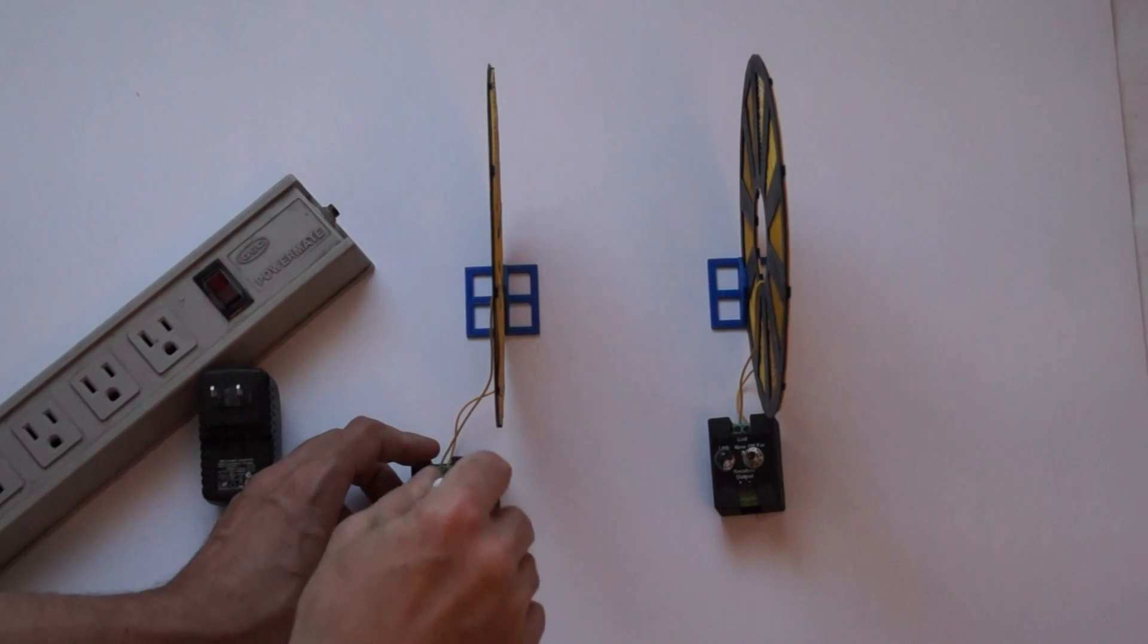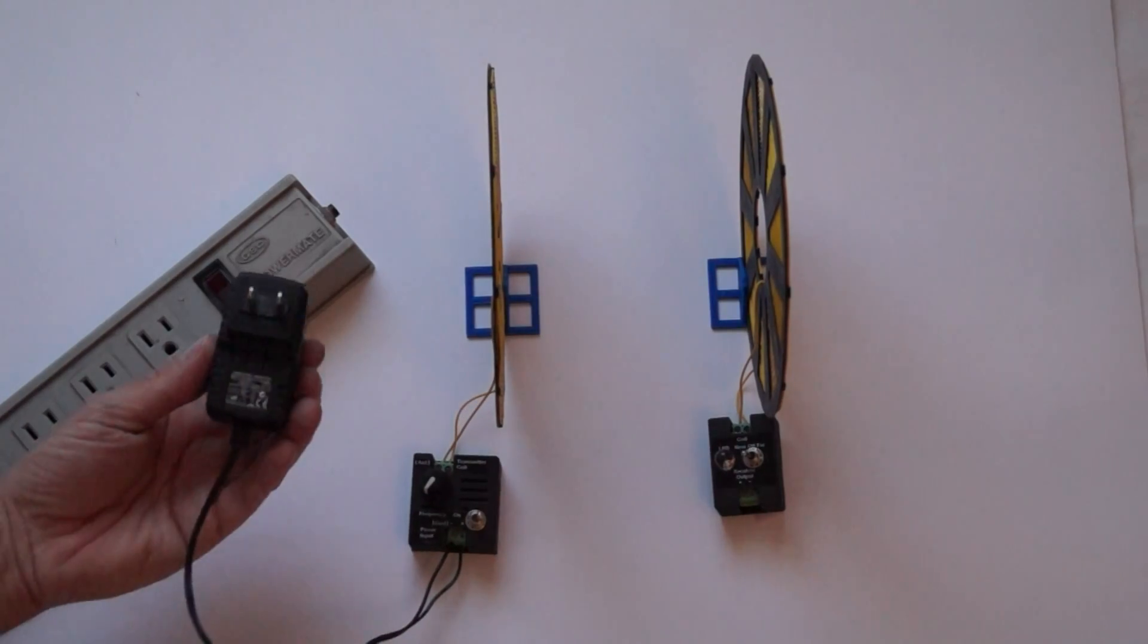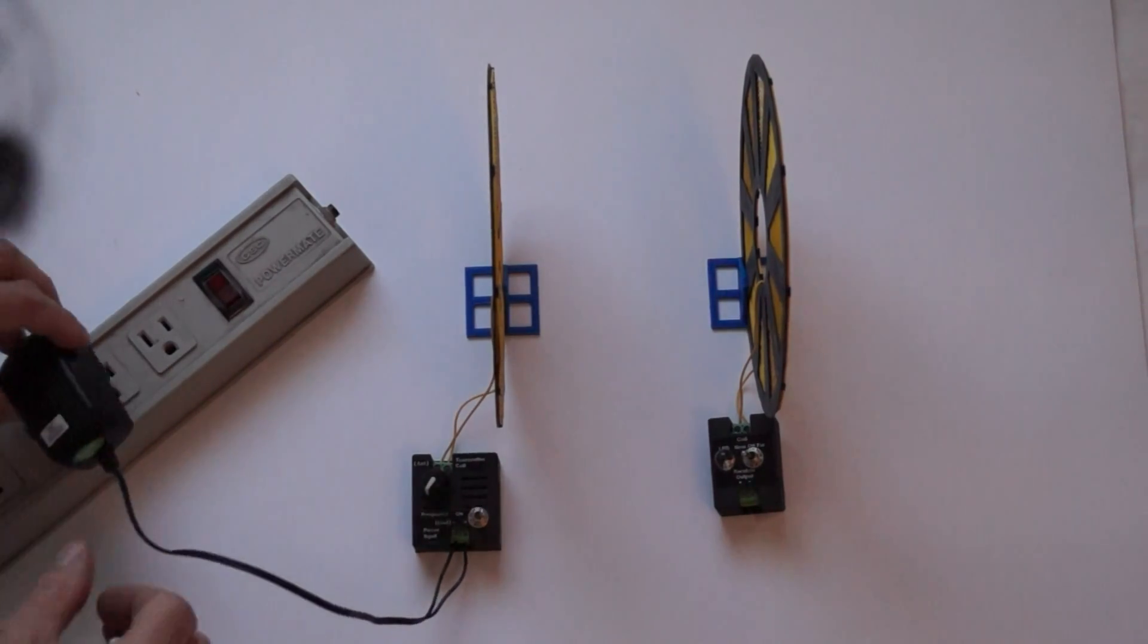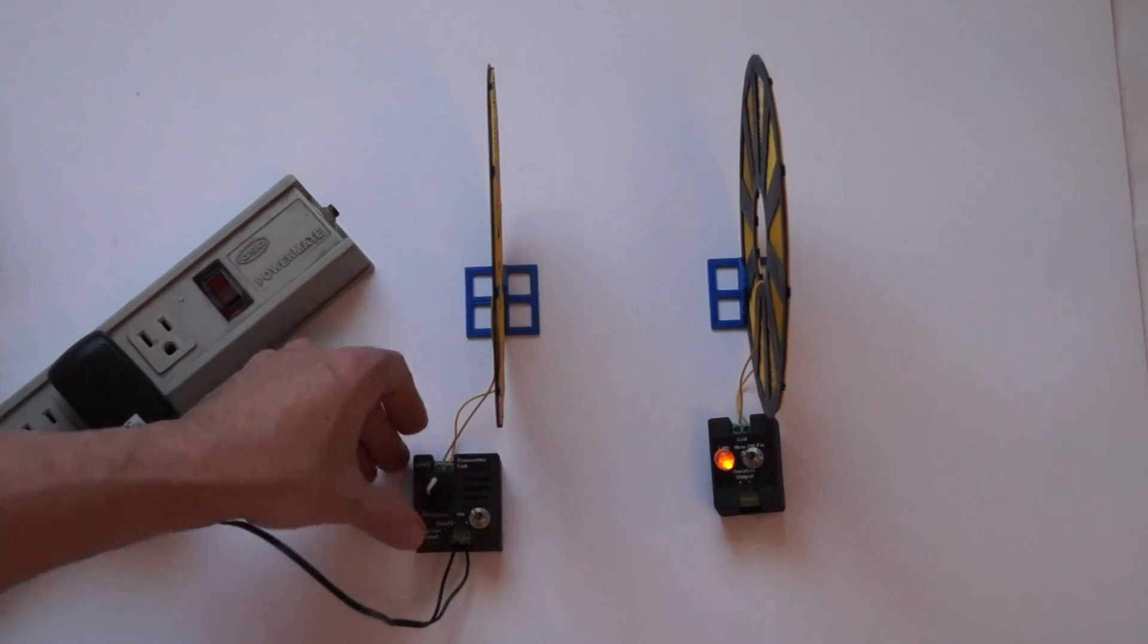The transmitter can be powered using a 12 volt 1 amp regulated wall adapter. Internal protection is provided in case the polarity is reversed. Never use more than 13 volts DC to prevent damage to the transmitter.